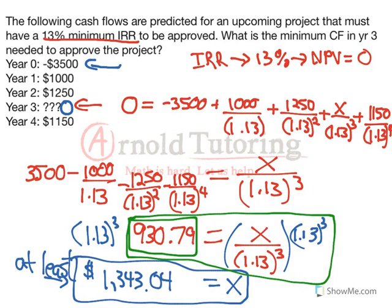Roll that $930 forward 3 years — which is what we did algebraically anyway — and we would have gotten back to $1,343. I like that we showed it this way because that's really what we're doing algebraically: setting the NPV to 0. If we just calculate the NPV with these cash flows, a cash flow of 0 in year 3, using the internal rate of return provided, then roll that NPV forward to whatever year we need — those two methods are pretty straightforward.